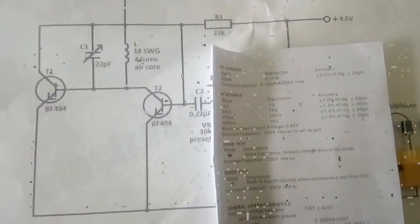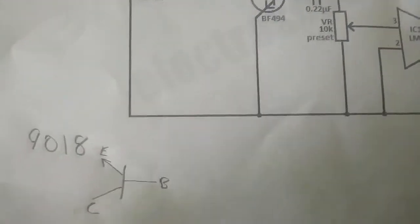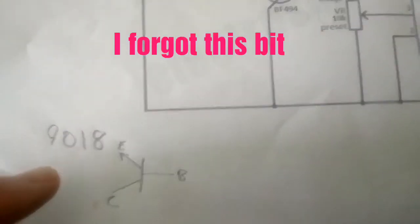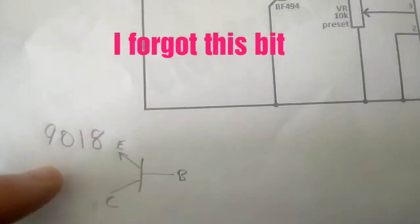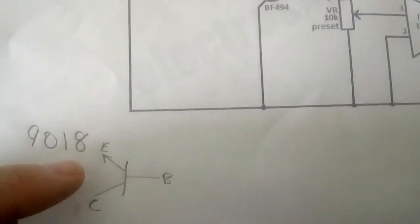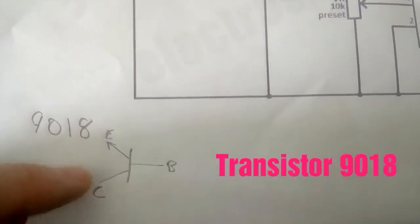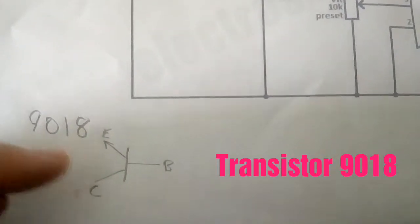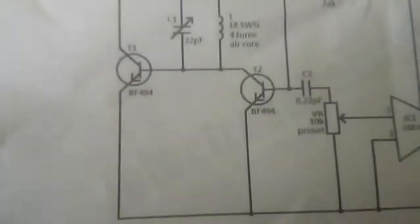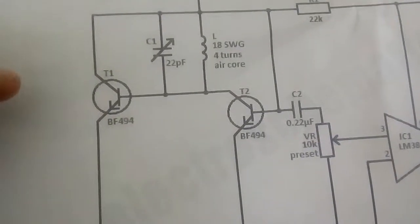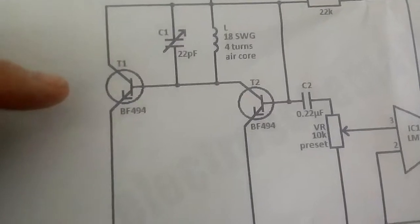Something to note when you're using this alternative transistor is the fact that the emitter and collector are the other way around. So if you're using them on this circuit, it's a case of just literally turning the transistor the other way around, which seems to be quite self-explanatory.